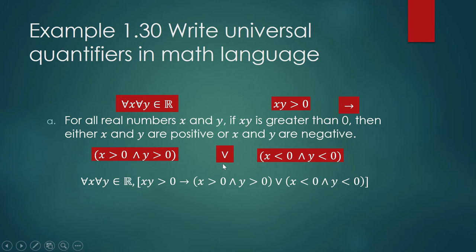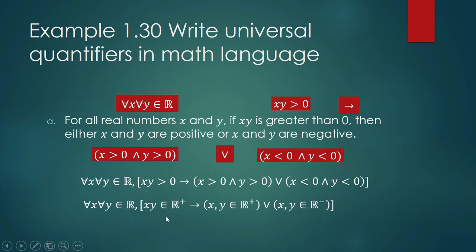When we read the math sentence, we read it in a pleasant way: for any real numbers x and y, if x times y is positive, then either both x and y are positive, or both x and y are negative. Note that 'x times y is positive' is the same as saying the product xy is an element of the set of positive real numbers. Similarly, x and y being positive means they are elements of the positive reals, and x and y being negative means they are elements of the set of negative real numbers.